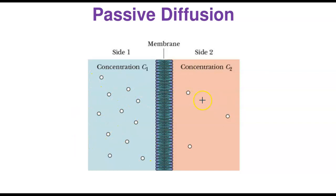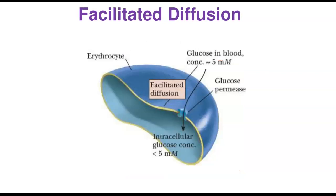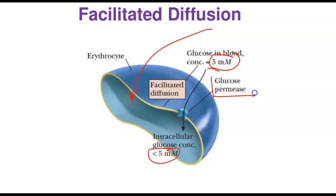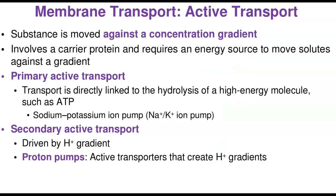In the example of simple passive diffusion, there are many molecules on one side and fewer on the other, so there is a flow from the region of high concentration to the region of low concentration. In facilitated diffusion, the concentration gradient is still the driving force — for example, 5 millimolar outside versus less than 5 millimolar inside. A carrier protein called the glucose transporter forms a channel allowing glucose to move from outside the erythrocyte (red blood cell) to inside, down the concentration gradient. This is a good example of facilitated diffusion.